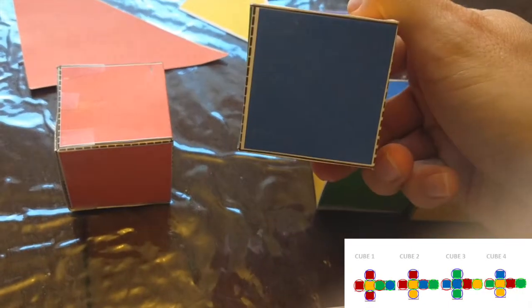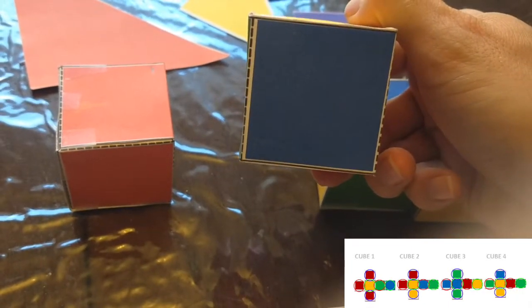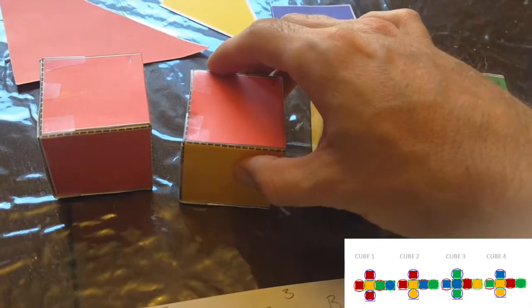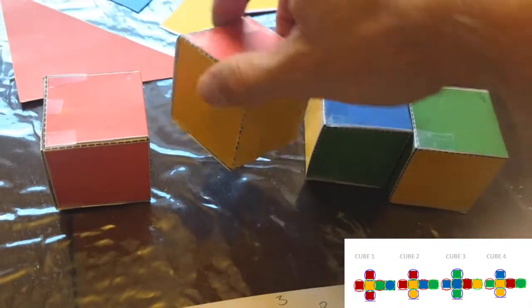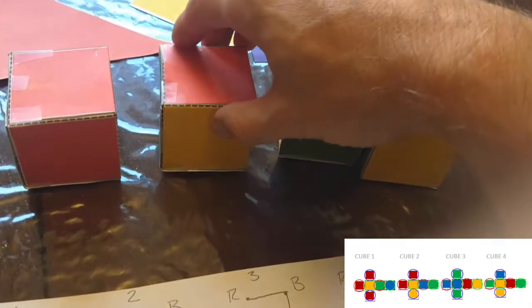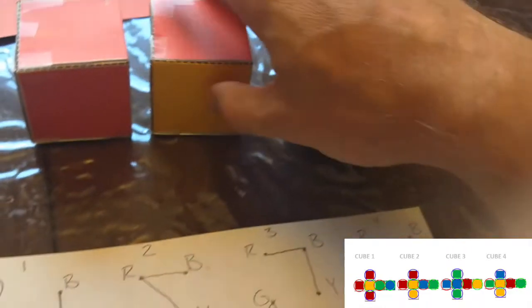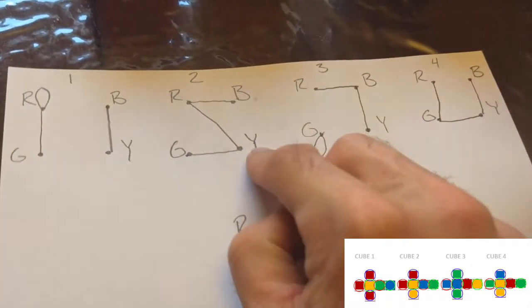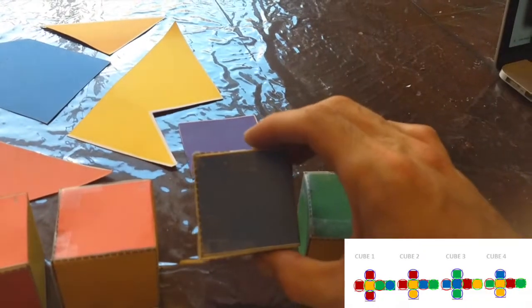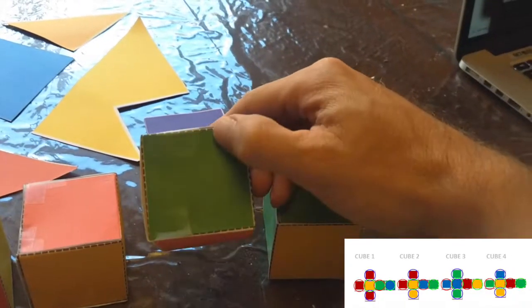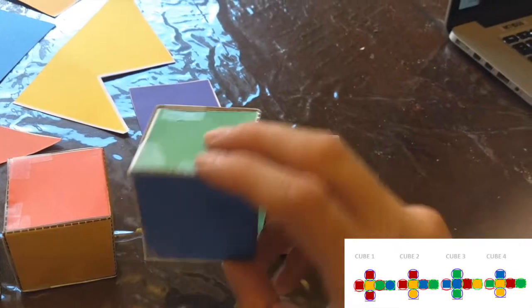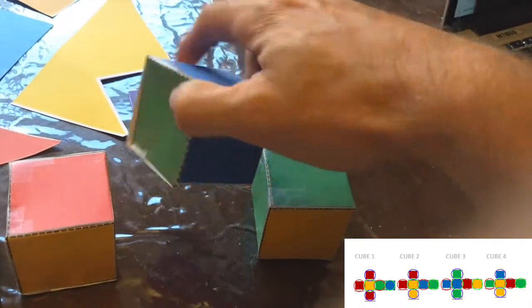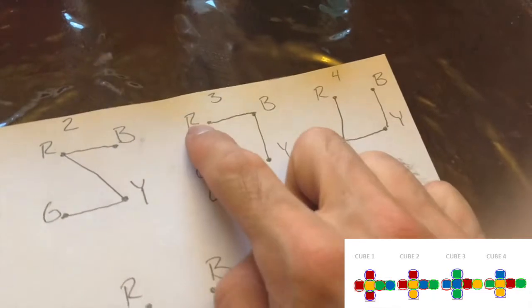Block two: red on top, blue on bottom, and on the sides we've got green, yellow, yellow on front, red on back. That works out to red to blue, red to yellow, and green to yellow. Block three: blue on top, red on bottom, green on front, green on back, yellow on one side and blue on the back.